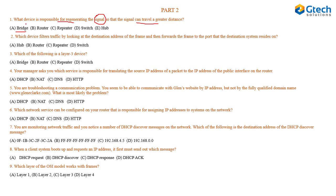Bridge is a layer two device — not the answer. Router is a layer three device — not the answer. A repeater is a layer one physical layer device, so it is a candidate. A switch is a layer two device. A router cannot regenerate signals. The device that regenerates signals is a repeater — it regenerates signals so that they can travel a greater distance.